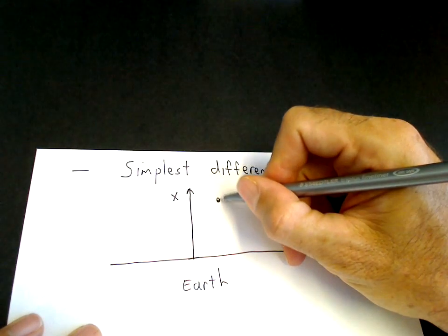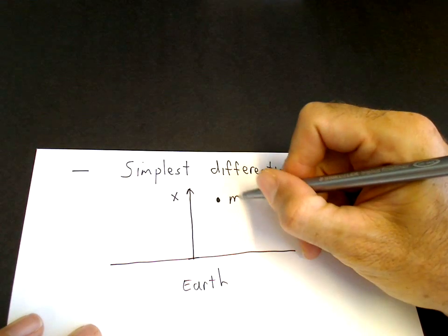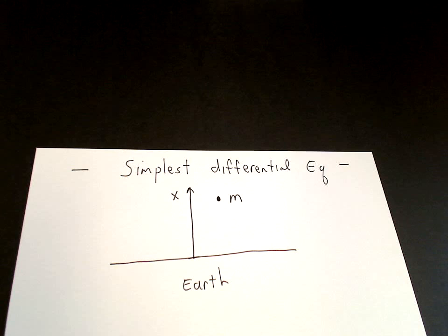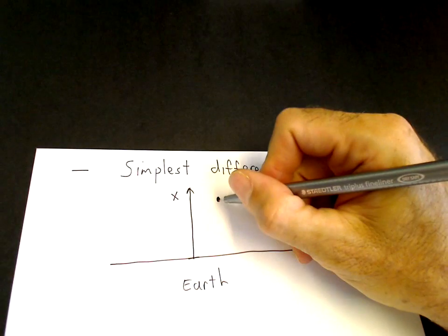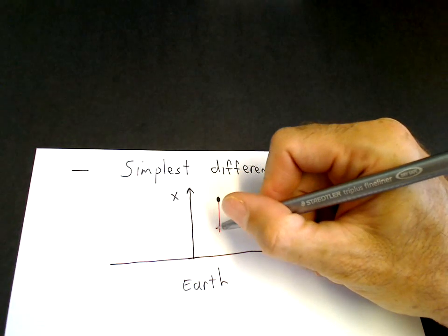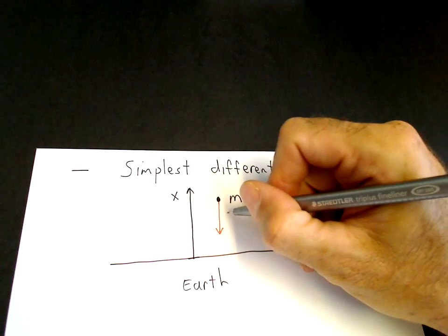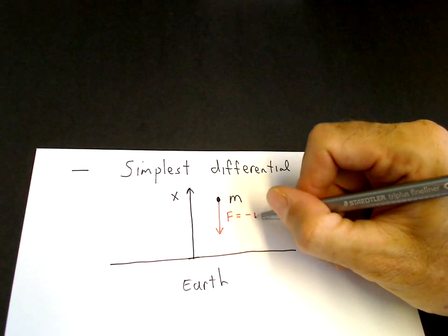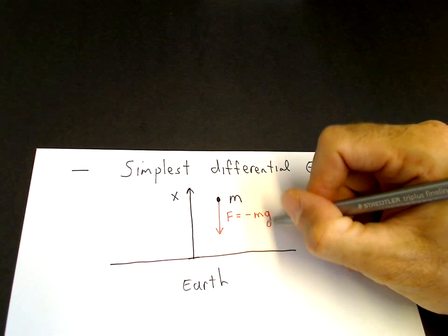We put a mass here which is m, and then we write Newton's law for that mass. So that mass has a force acting on it. The force points downward direction.